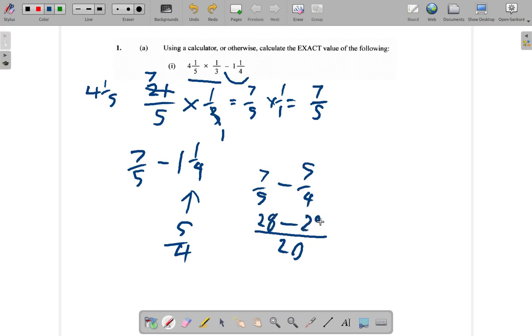5, 5, 25. So, 28 minus 25 is going to be 3 20th. 3 20th. Alright?